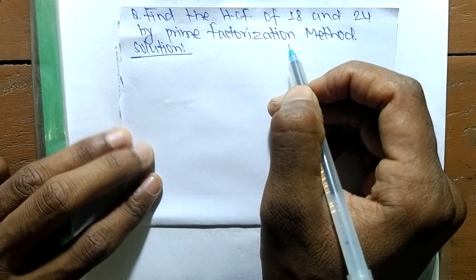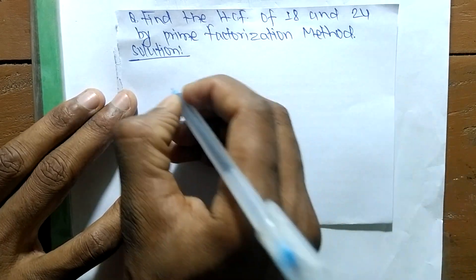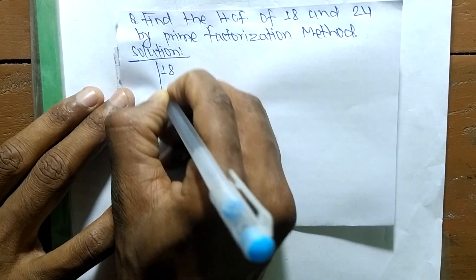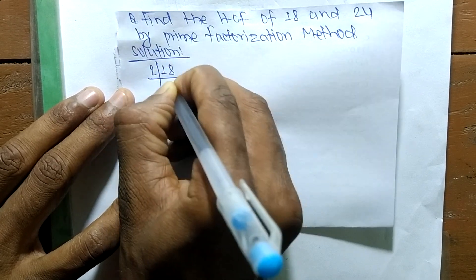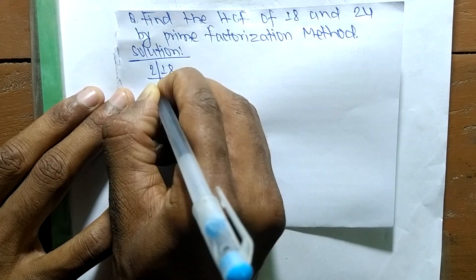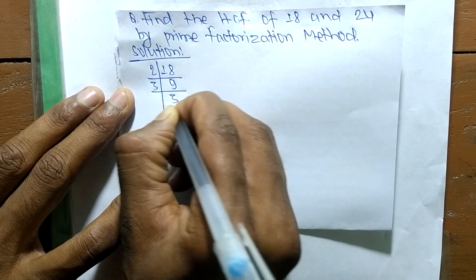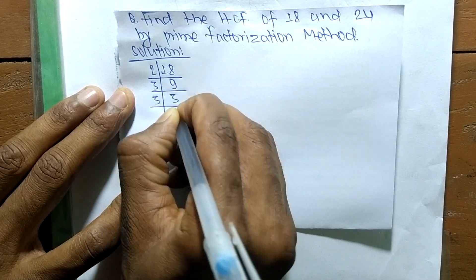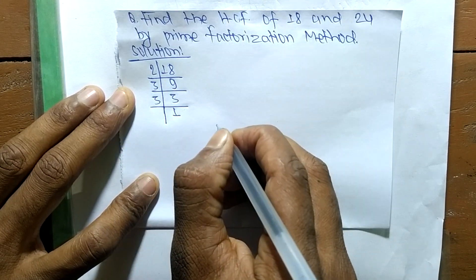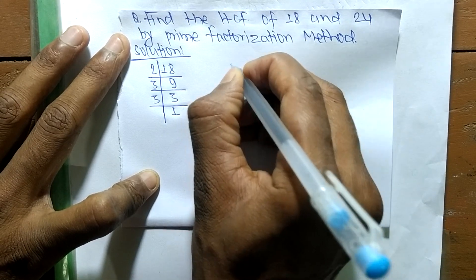In this method, first we find out the prime factors of 18. So it is 2 times 9 means 18, 3 times 3 means 9, and 3 times 1 means 3.